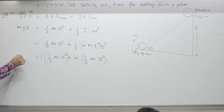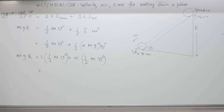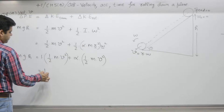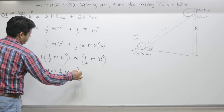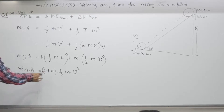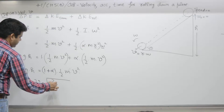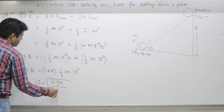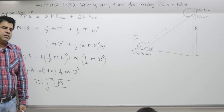Substituting and simplifying, we get (1 + α)·(1/2)mv² = mgh. The masses cancel, and what we get is v = √(2gh/(1+α)). This is divided by (1 + α).